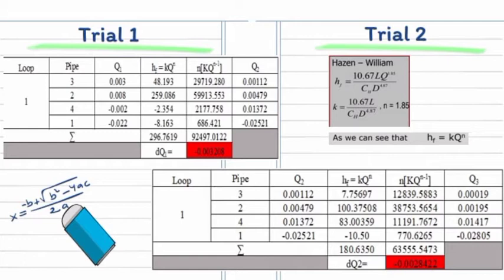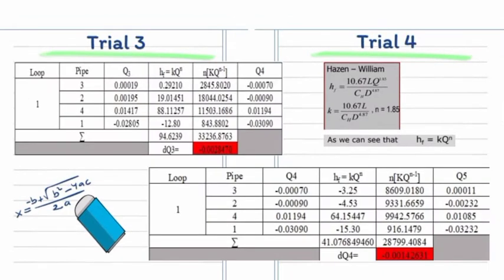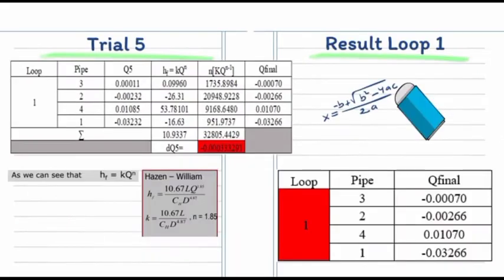For trial 3, we got negative 0.0028470. For trial 4, negative 0.0042631. And for the last trial, which is trial 5, we got negative 0.0033291. So this is the final result for loop 1. That's all from me, thank you.